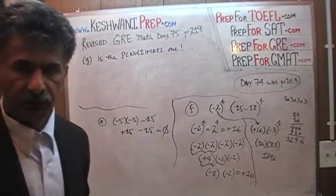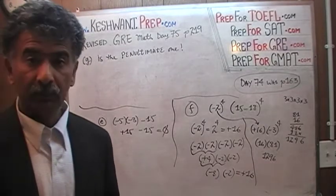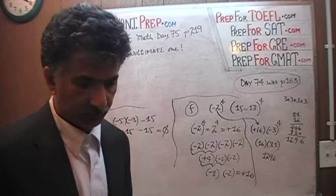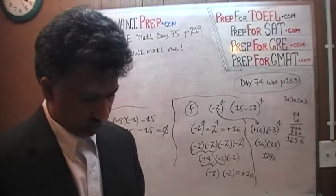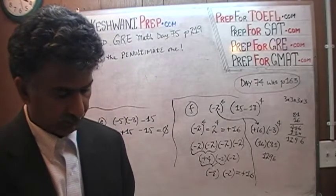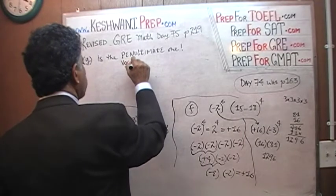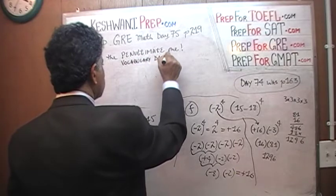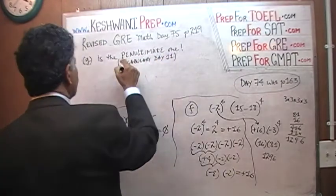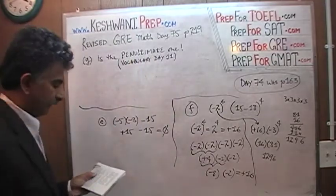The word that I just used was 'penultimate.' Penultimate simply means second to the last one, because H is the last one. If you want to learn this word properly along with some other words, you can watch the vocabulary lesson — day number 11. Just type in my name and then vocabulary day 11 and you will learn this word. Penultimate.